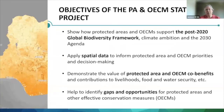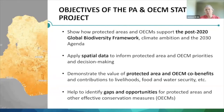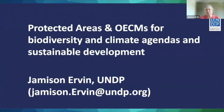There are four objectives of the protected area and OECM status project. The first is to help show how protected areas and OECMs support the post-2020 global biodiversity framework, climate ambition, and the 2030 agenda. We will support countries by applying spatial data to help inform protected area and OECM data that countries can then use to set priorities for decision making. We hope to demonstrate the value of protected area and OECM co-benefits to humanity — contributions to livelihoods, food and water security, as well as carbon and other benefits. And finally, we hope to identify gaps and opportunities for increased ambition for protected areas and other effective conservation measures. Thanks for joining this webinar and we look forward to supporting you with the creation of dossiers and reporting, and to an ambitious and successful COP15.